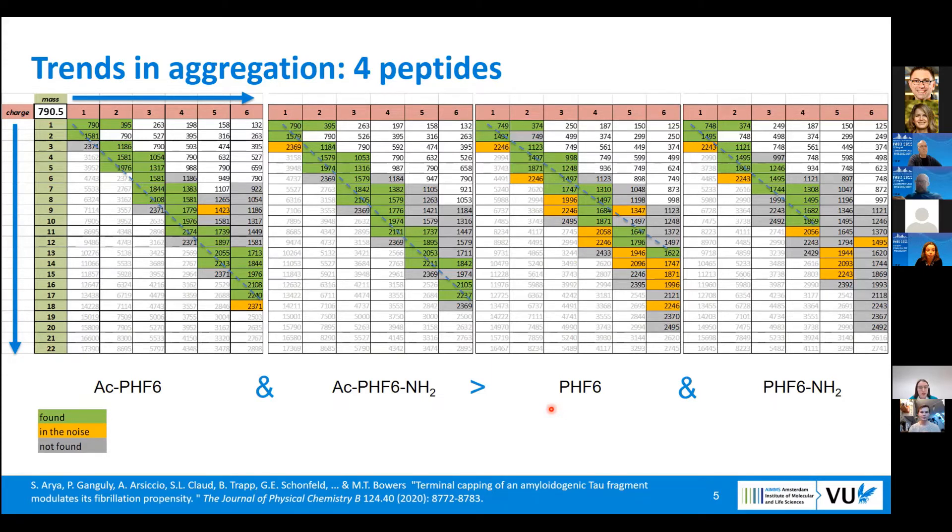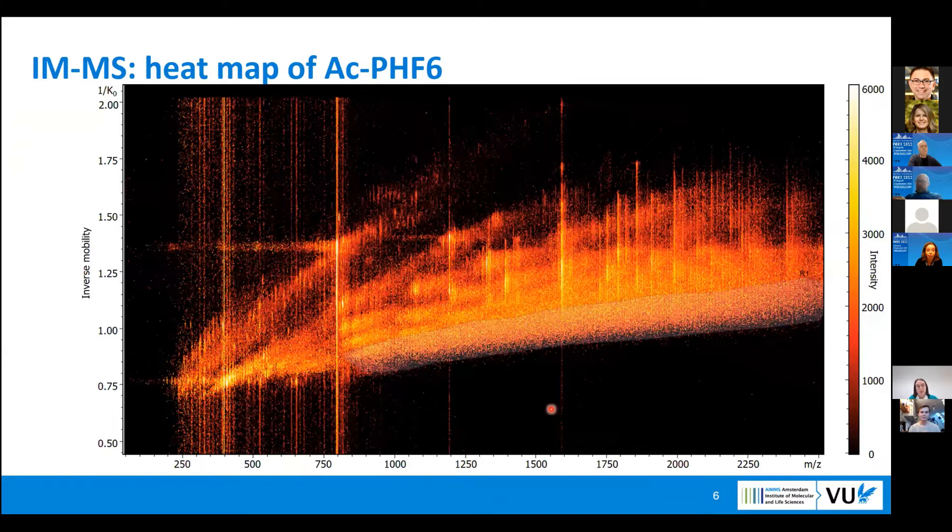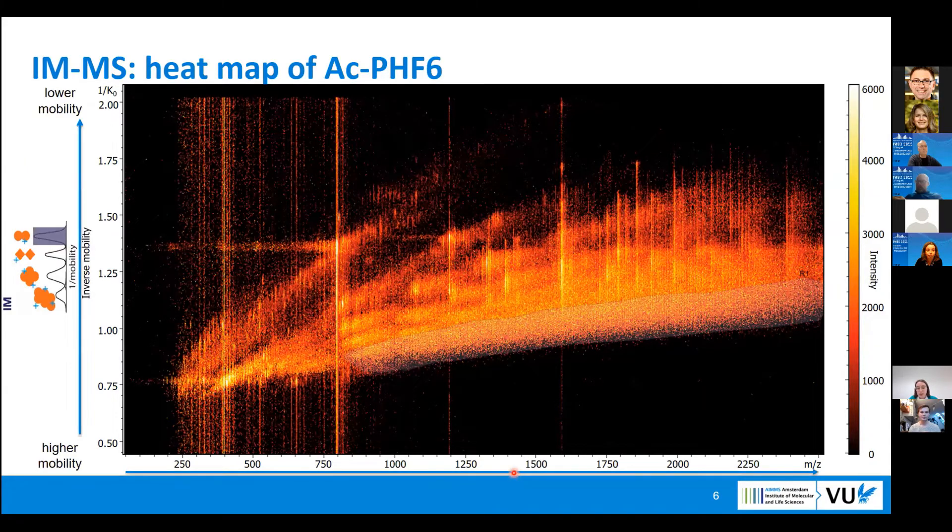Now I will show how I make the assignment of the ions. For that we need ion mobility and the mass, and that can be visualized with the heat map. On the heat map we have X-axis m/z ratio and Y-axis is inverse mobility. Species with high mobility are here and they also correspond to more compact or larger oligomers, and low mobility species are here that are more extended conformations or smaller oligomers with lower charges as well.